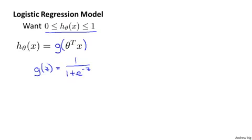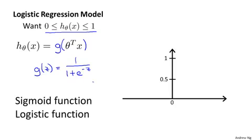This is called the sigmoid function or the logistic function, and the term logistic function is what gives rise to the name logistic regression. By the way, the terms sigmoid function and logistic function are basically synonyms and mean the same thing. The two terms are basically interchangeable, and either term can be used to refer to this function g.